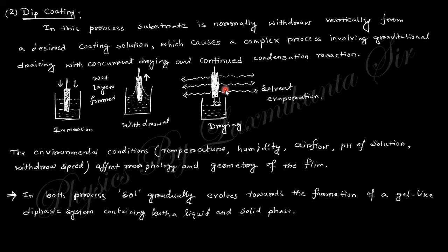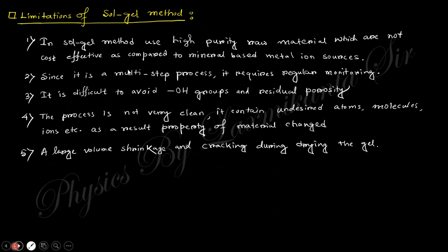So these are the two processes: spin coating and dip coating. By these two processes, both are sol-gel method, that means there is a sol and another is gel. Sol gradually evaporates towards the formation of a gel-like dispersed system containing both liquid and solid phase.